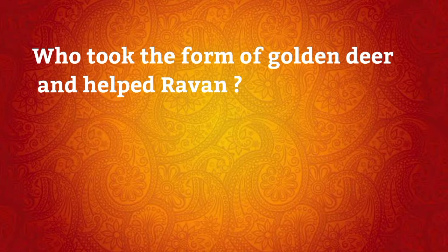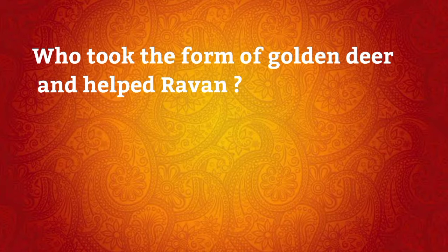Who took the form of a golden deer and helped Ravan? Answer is Maricha.